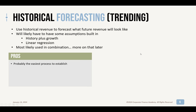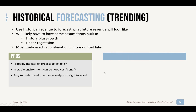Pros: this is probably the easiest process to establish, especially if you're really doing a true simple historical forecast or trend. In a stable environment, this can actually have a pretty good cost-benefit ratio in terms of how much effort and energy and time it takes to do it and the accuracy benefit you get from it. And it's fairly easy to understand the variance analysis that goes along with it — it's straightforward. You'll know if something deviates.